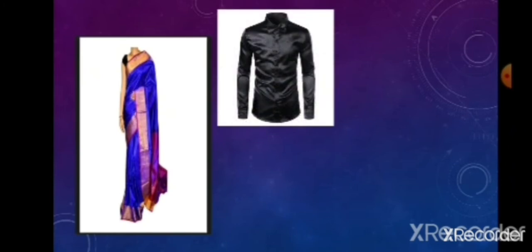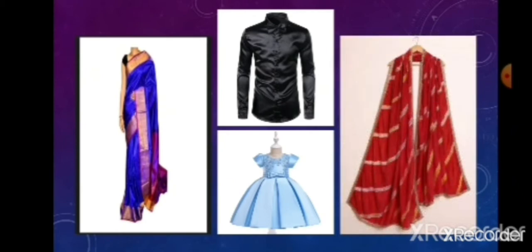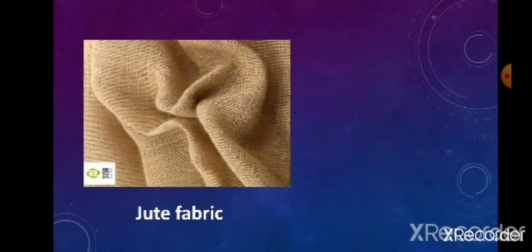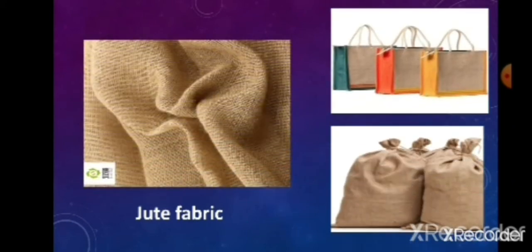This is cloth made from silk — silk sarees, shirts, and bags. The next type of fabric is jute. We get bags and other items from jute material.